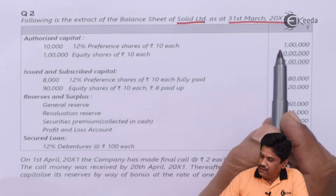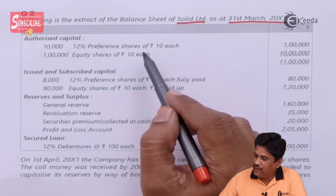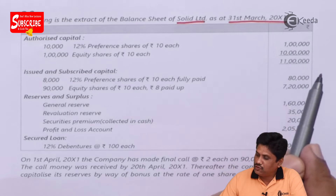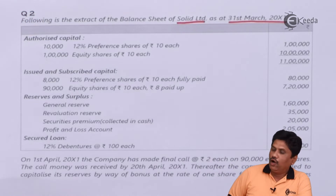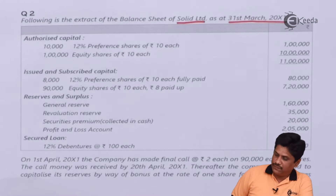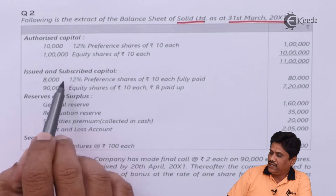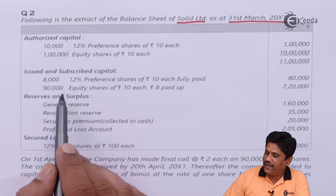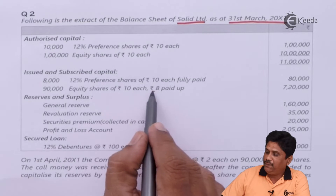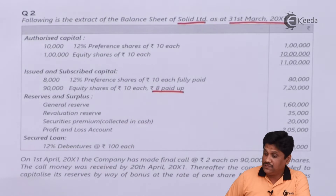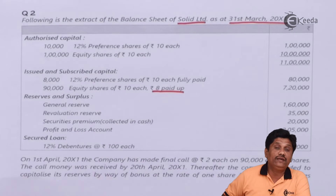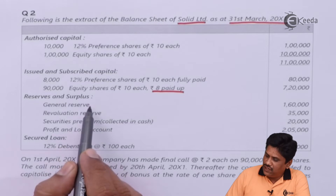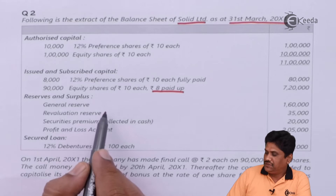They give you authorized capital: 10,000 twelve percent preference shares of ₹10 each and 1 lakh equity shares of ₹10 each, so their total authorized capital comes to ₹11 lakhs. Authorized capital is merely information. Out of that, the issued capital: 8,000 shares of twelve percent preference shares of ₹10 fully paid, and 90,000 equity shares of ₹10 are ₹8 paid — meaning these equity shares are partly paid at this point.